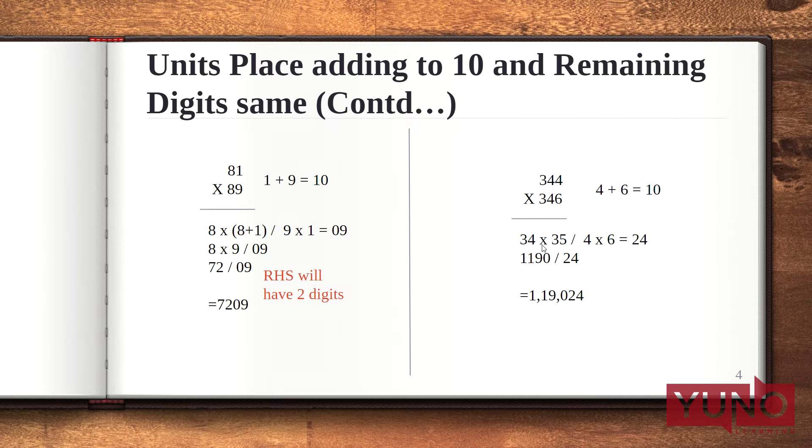Now here you can perform this multiplication 34 and 35 with any of the multiplication techniques that we have discussed in previous videos. You can also refer to the video of Urdhva Tiryak Bhyam. So my final answer of 344 multiplied with 346 is 1,19,024.